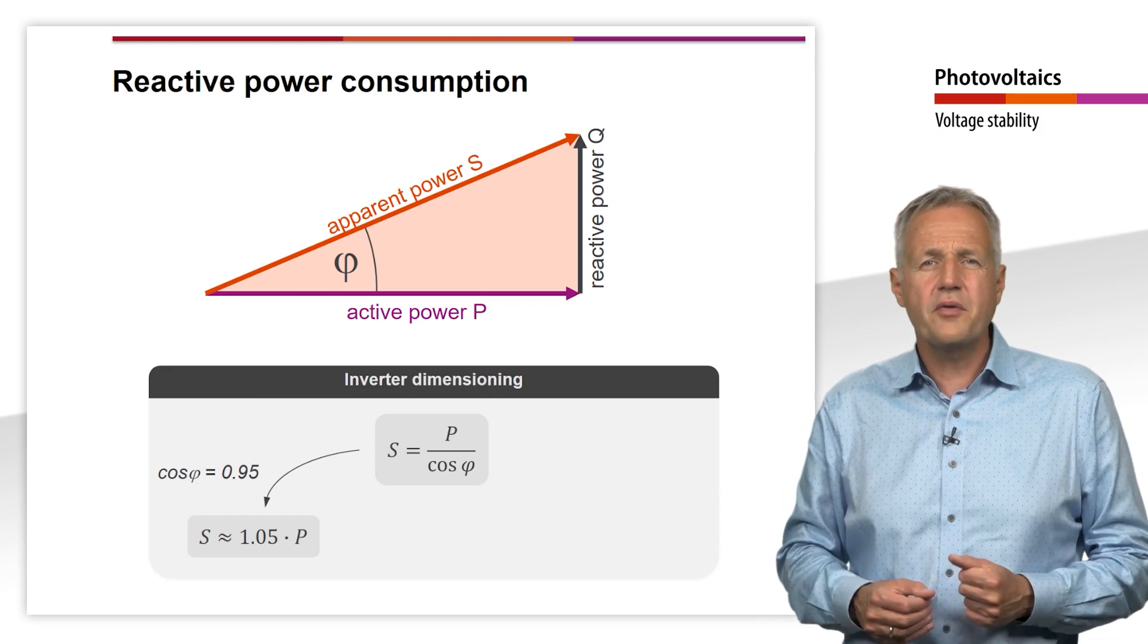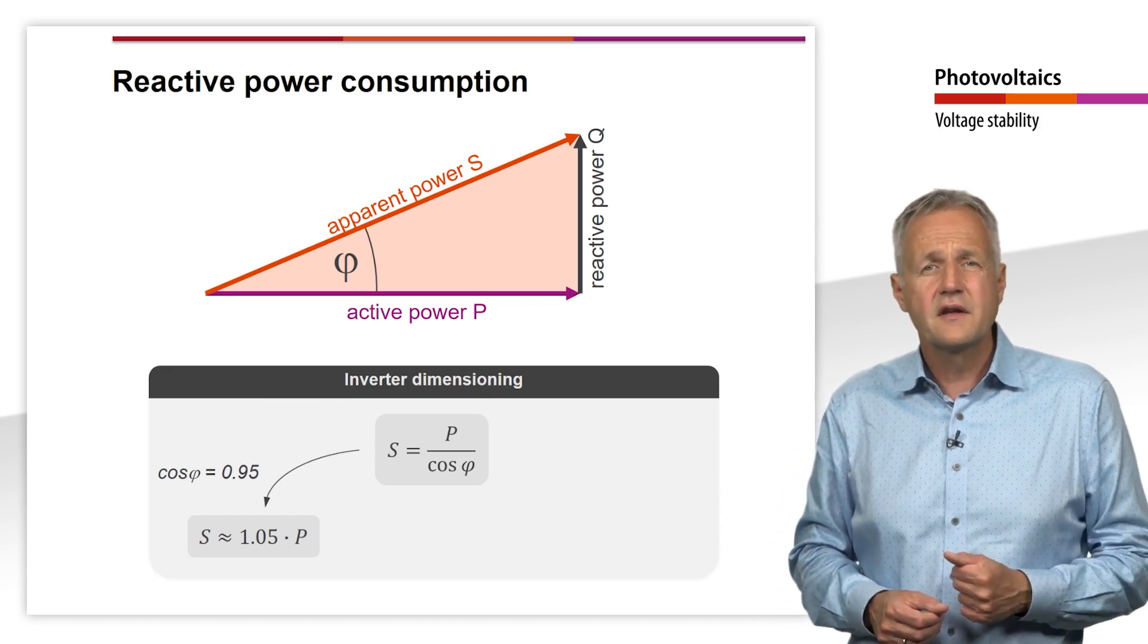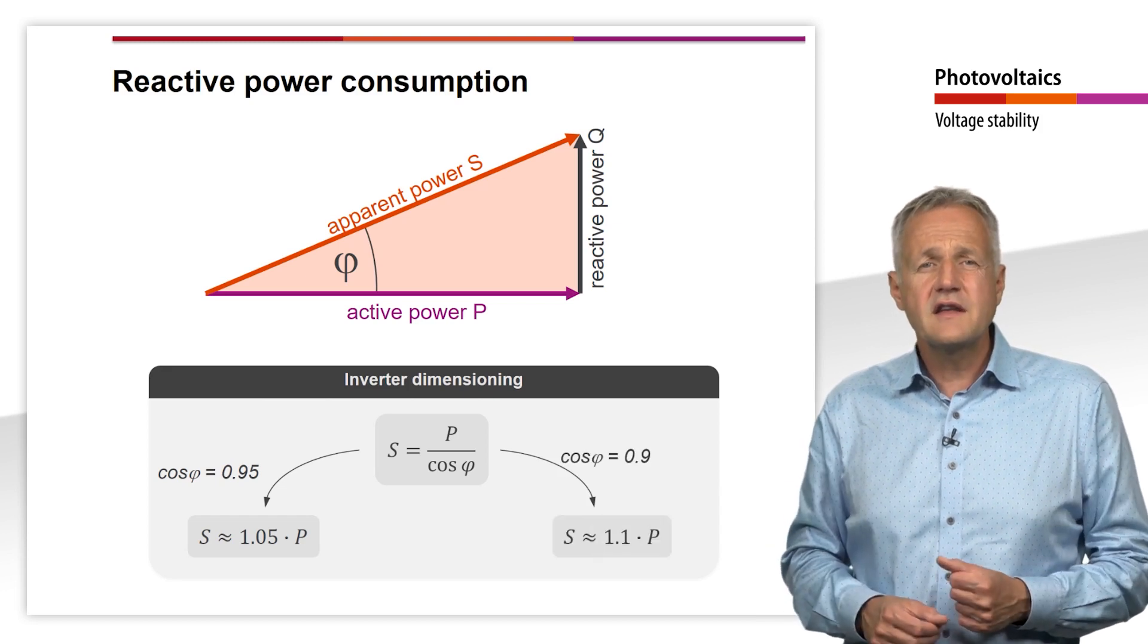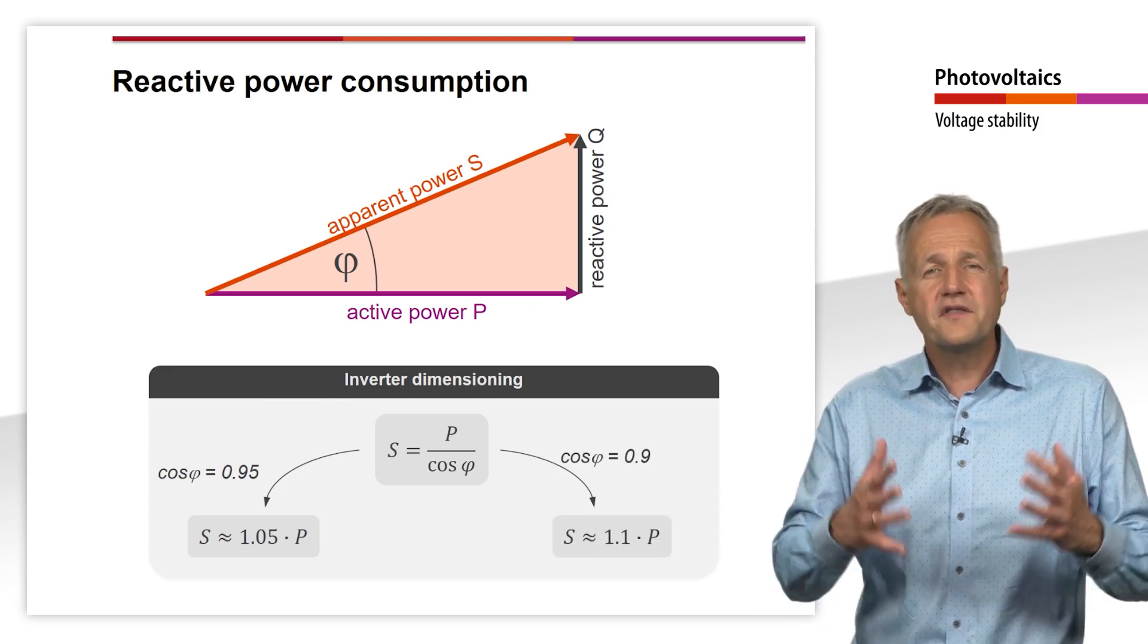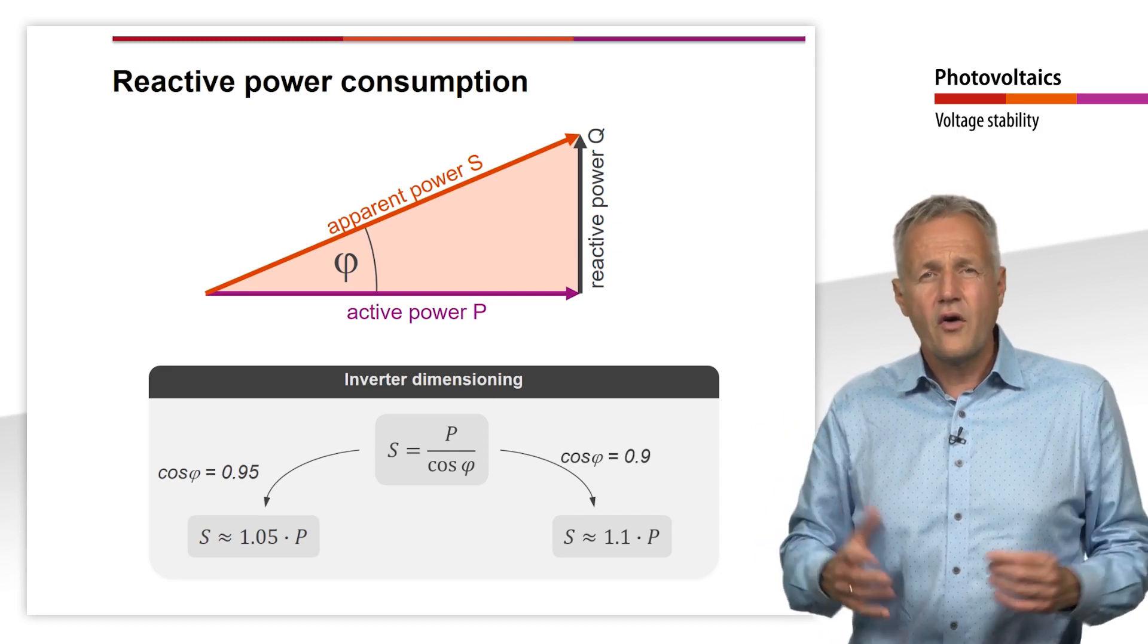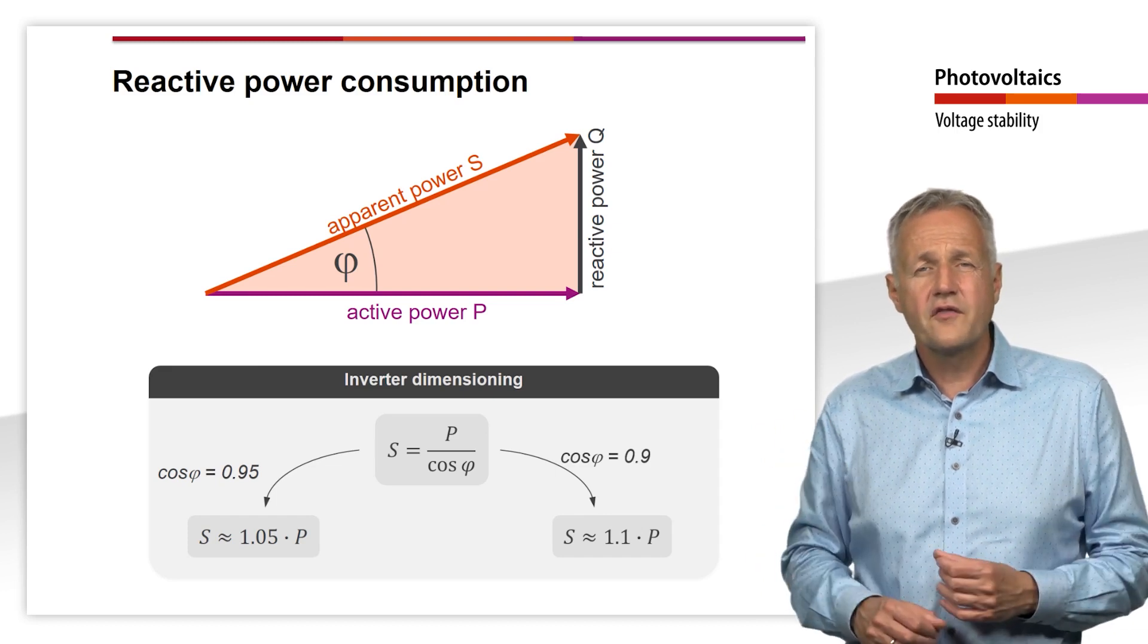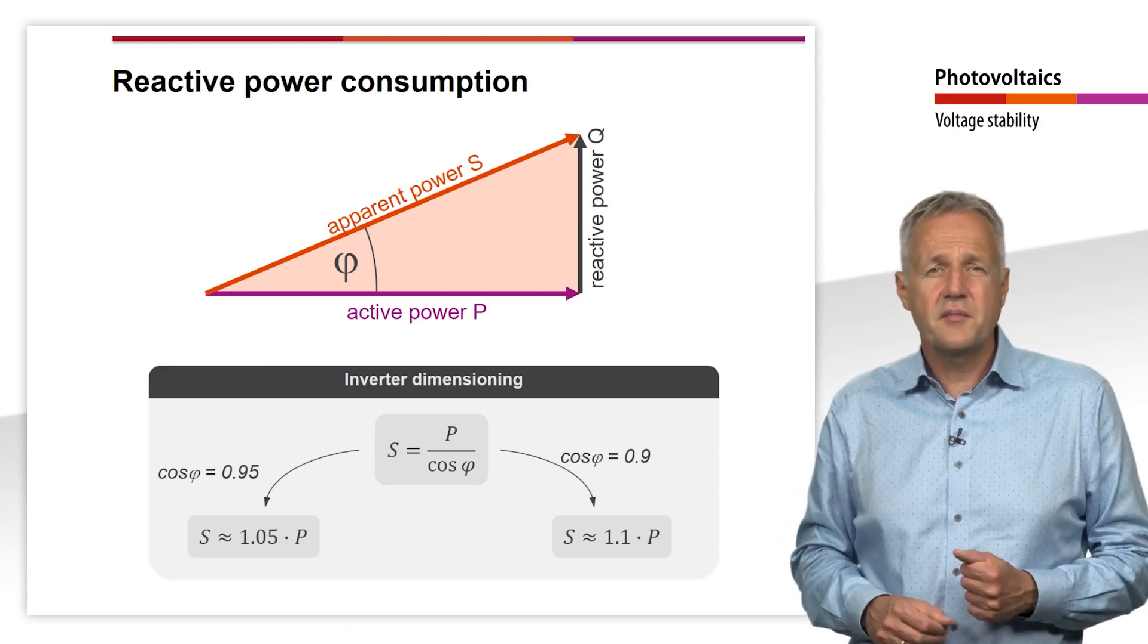If the grid operator requires a cosine phi of 0.95, the inverter must even be designed more than 10% larger. In Germany, a cosine phi of 0.95 may be demanded for plants with a size of 14 kW peak and above.